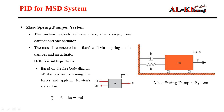F, which is in the positive direction, minus the force from the damper and the force from the spring, equals the force on the mass. This is the differential equation of the system.